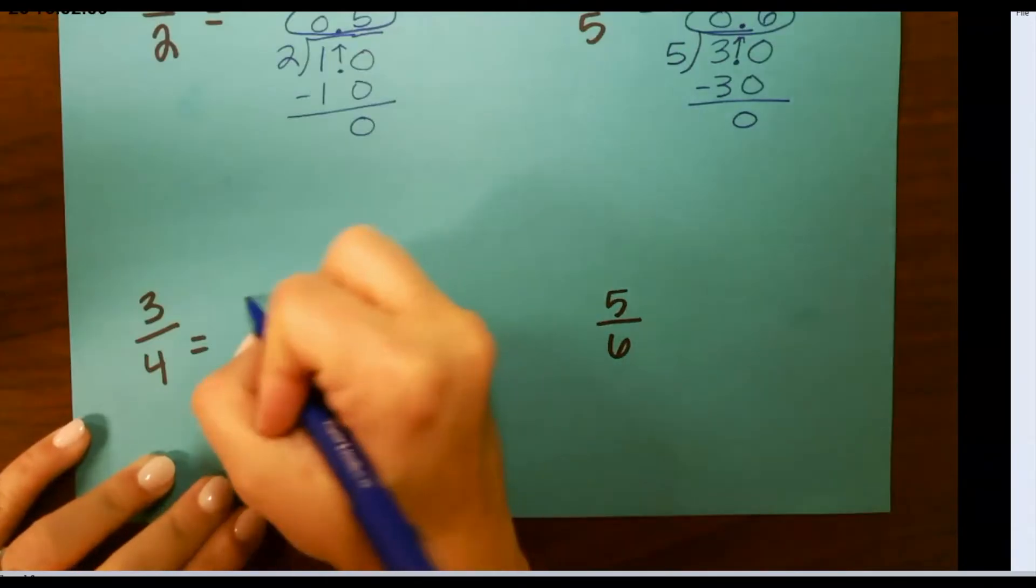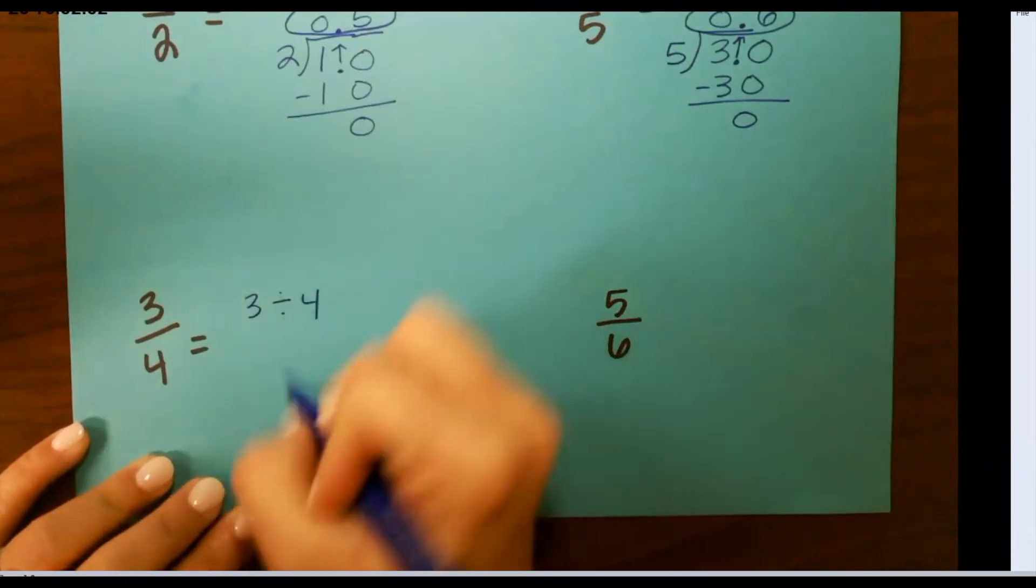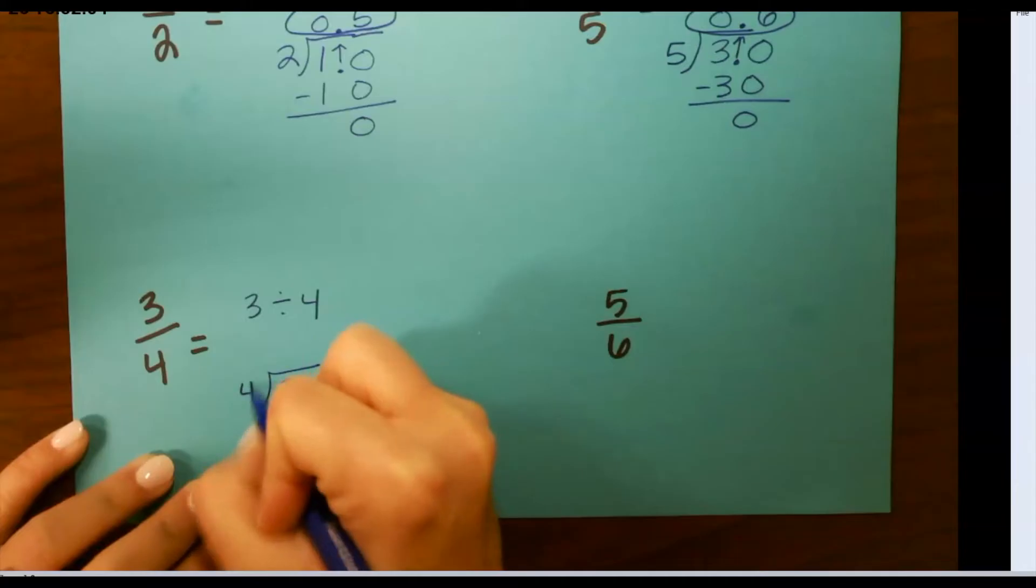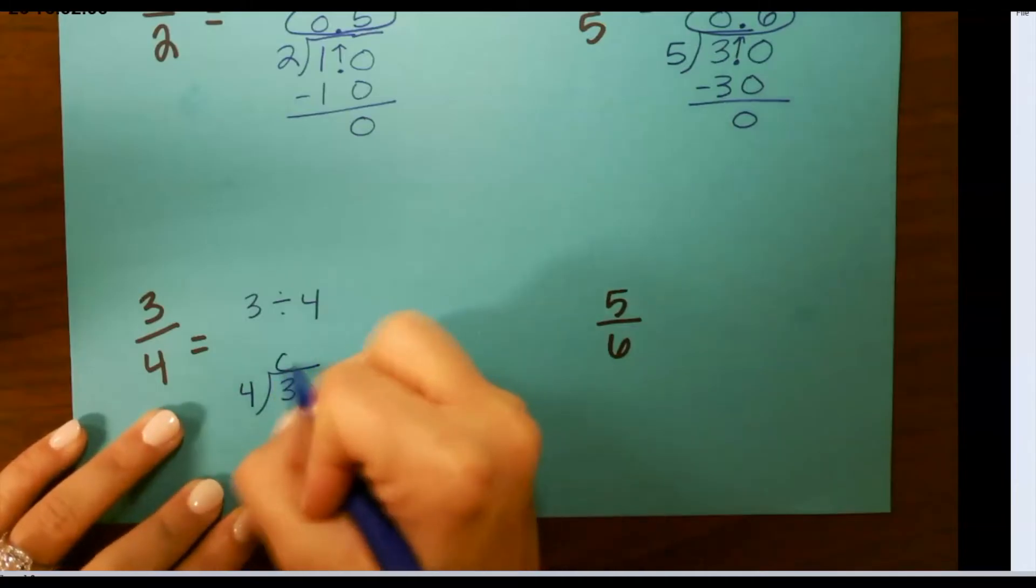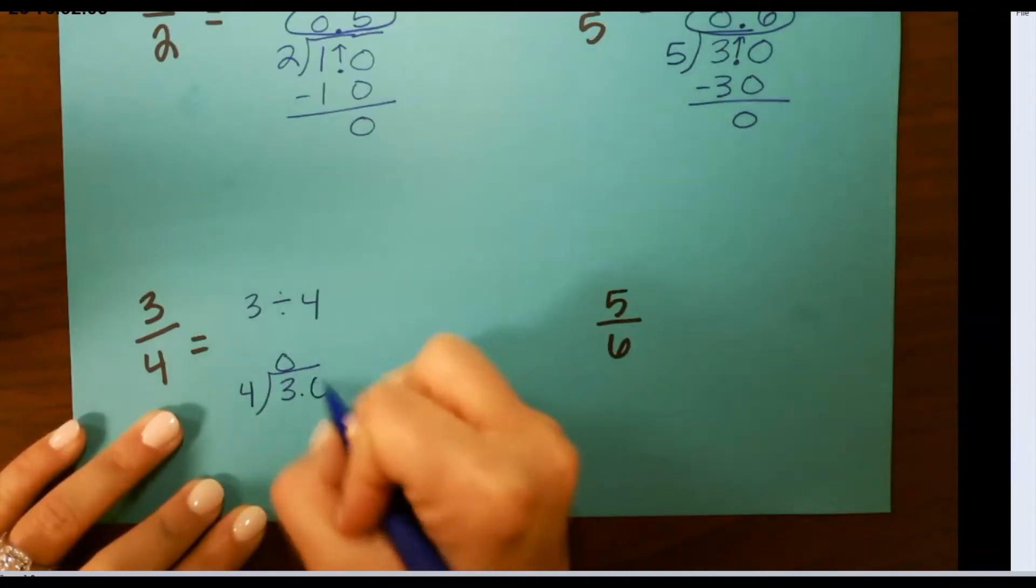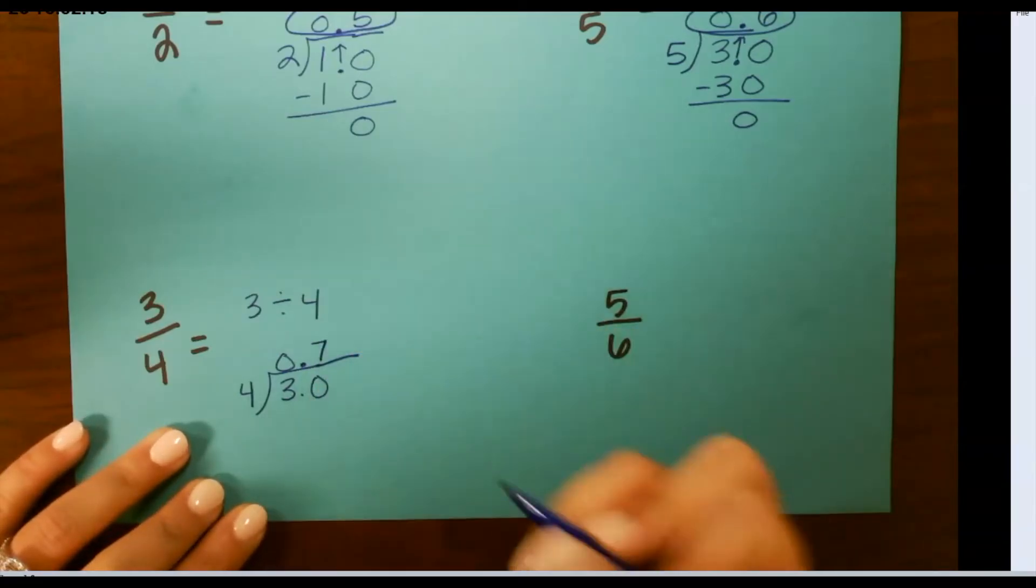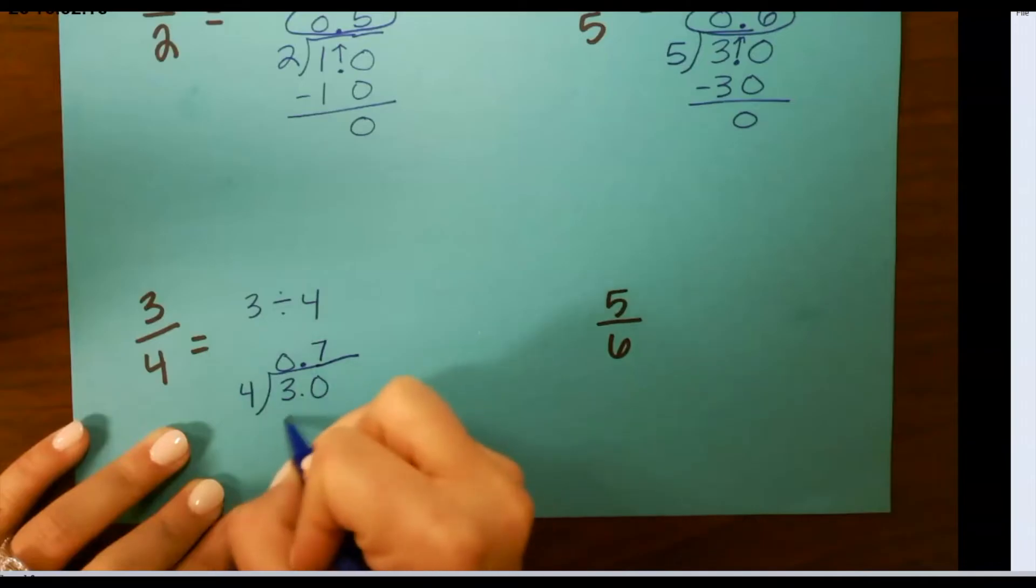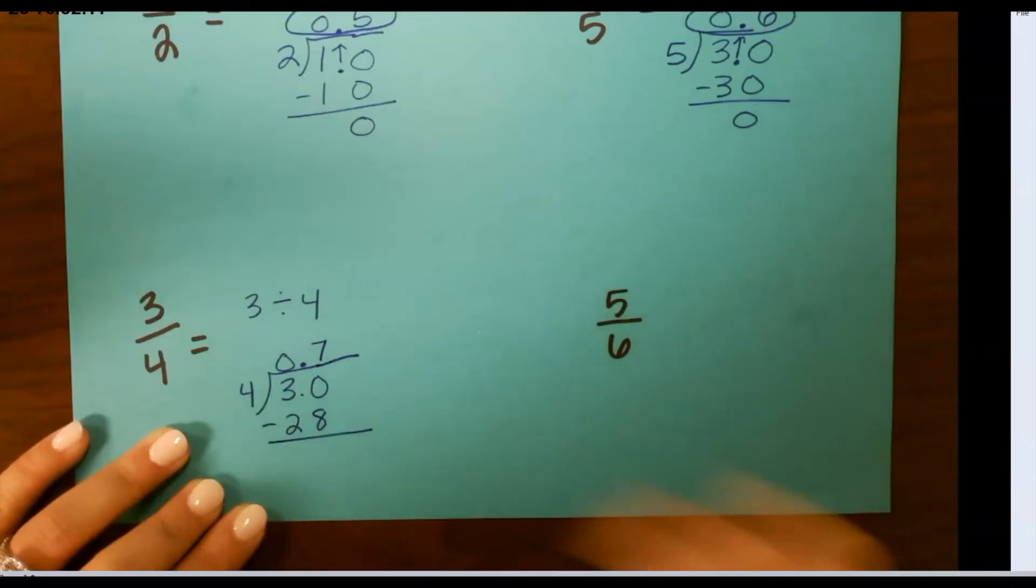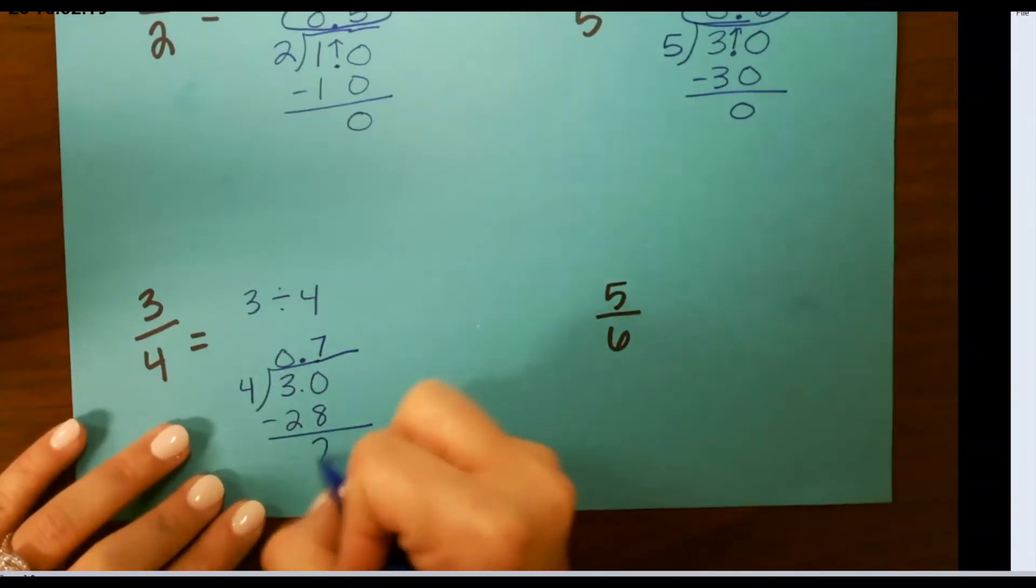For 3 fourths, we're going to do 3 divided by 4. Again, 4 cannot go into 3, so I add a 0 and a decimal. 4 goes into 30 7 times. 7 times 4 is 28. Subtract and that will give me 2.